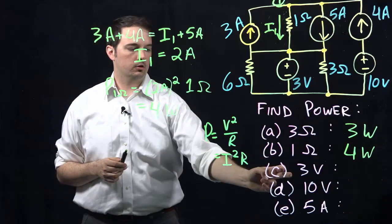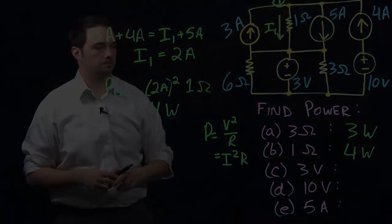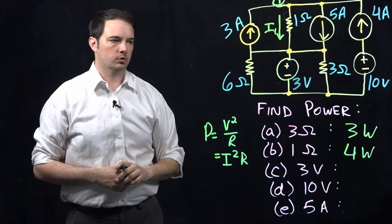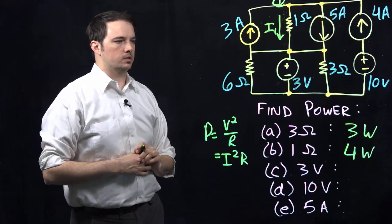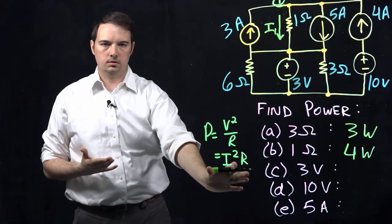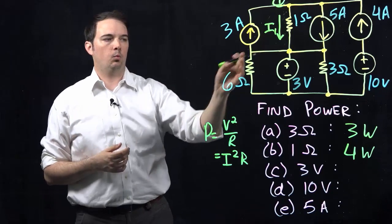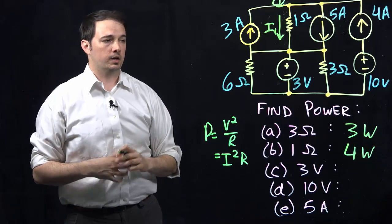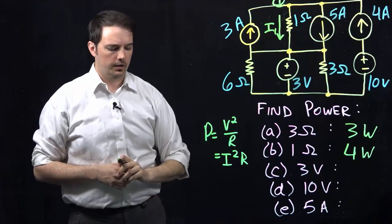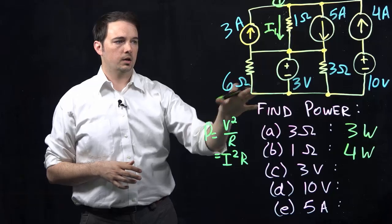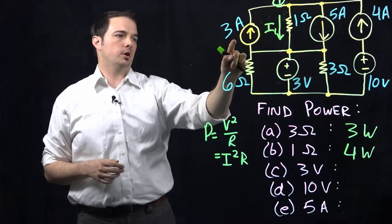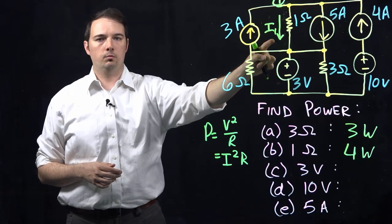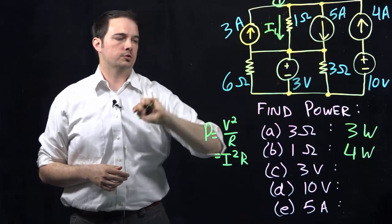Let's move on to part C, which is the 3 volt source indicated right here. Figuring out the power dissipated or absorbed by the 3 volt voltage source gets a little more tricky. It's not a resistor, so I can't apply those expressions. I need to figure out what current is flowing from or into this voltage source. The only way to do that is by looking at all the currents throughout the other parts of the circuit. We know the current I1 from part B, and the two current sources are defined.